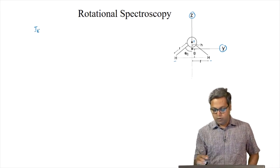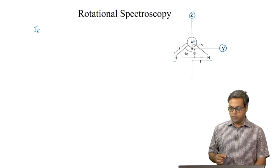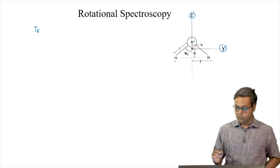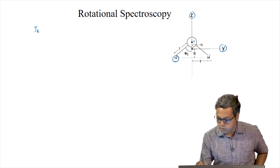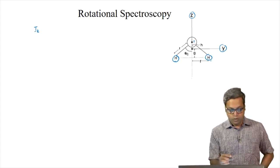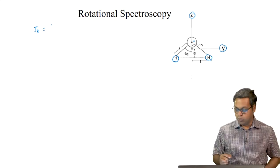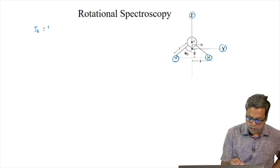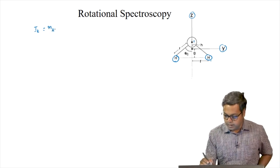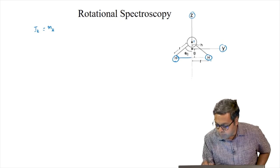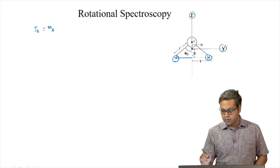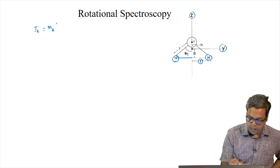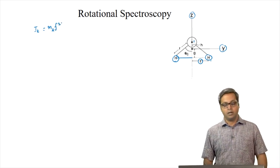Because the oxygen atom lies along the Z axis, it will not contribute to the moment of inertia along the Z axis. So only the two hydrogen atoms will contribute. I can write I_Z: the contribution from each hydrogen atom is the mass of hydrogen times the perpendicular distance from the hydrogen atom to the Z axis, given by F. So I can write 2 M_H F squared.